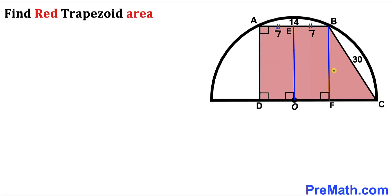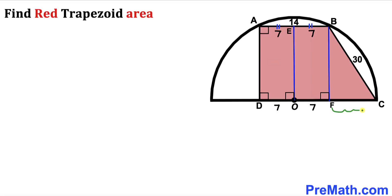I have also dropped another perpendicular BF. We can see that O is the midpoint of segment DF, so DO equals OF. Since AE is 7, each of those segments is 7 as well. Let's assume segment FC is X units and the height of the trapezoid BF is lowercase h. Our task is to find X and h.